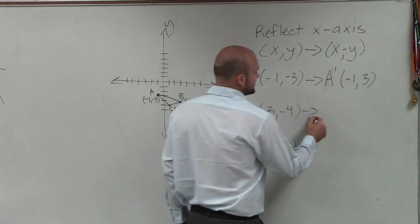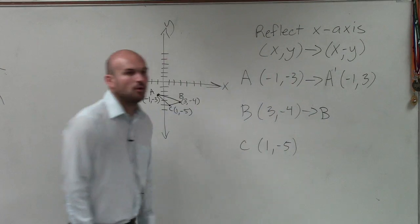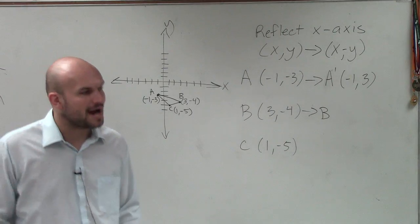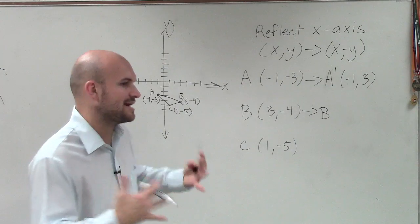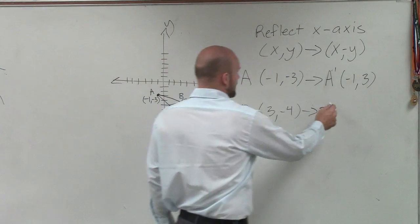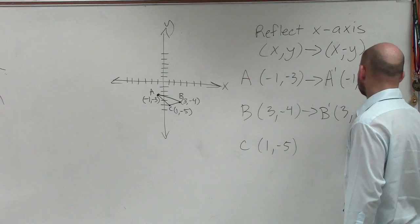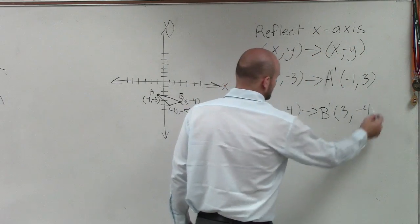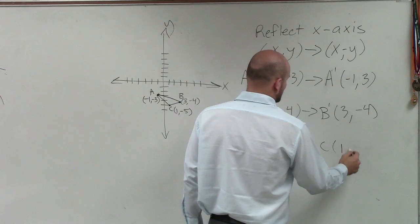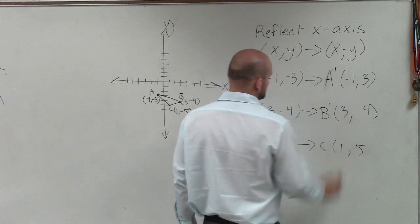So the next thing I want you guys to understand is these new points, we label them with this little prime. This is A prime, B prime. That means that's the point that I've transformed. So B prime is now going to be (3, 4). And C prime is now going to be (1, 5). Sorry, that's a positive 4.